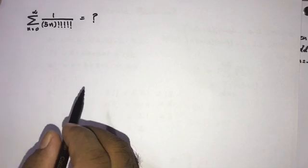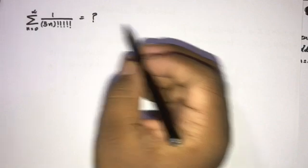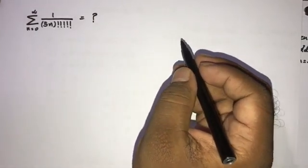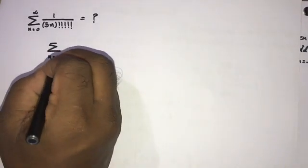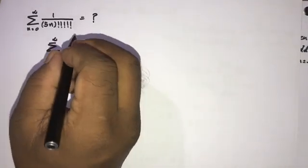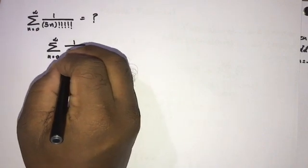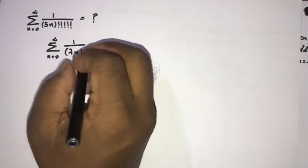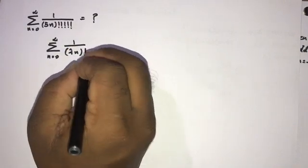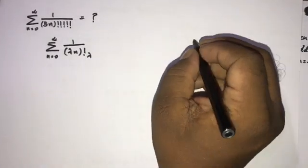First, let's try to prove the general case. If we take the sum from n equals 0 to infinity of 1 over lambda times n multifactorial lambda — here lambda is a constant — we want to evaluate this general sum.